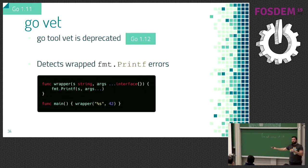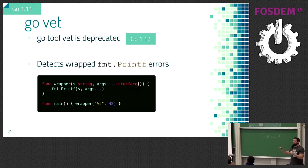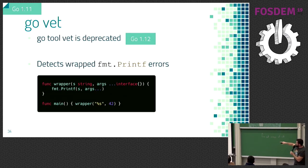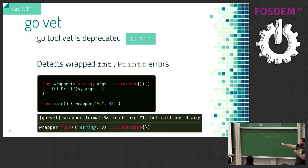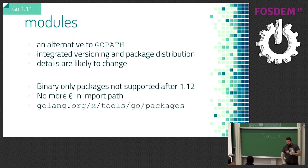GoVet is deprecated — go tool vet does not exist anymore. GoVet is the thing you should be using. Also, there's a new mistake detector: if you have a wrapper format with a percent directive but remove the argument, previously it would not complain. Now it will detect it and say 'wrapper format percent has argument 1, but go tool has zero arguments.' So a little bit smarter error detection in GoVet.